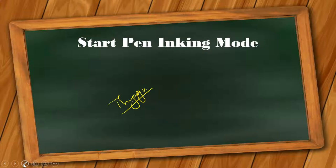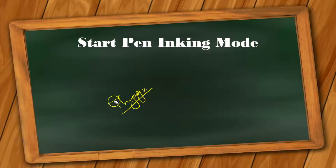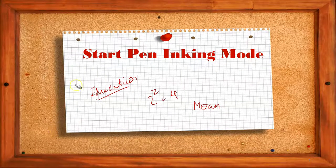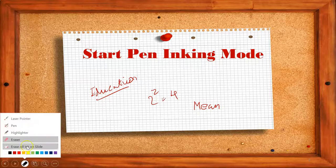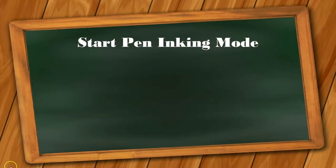Suppose I want to erase annotations — how do I erase them? Go to the third button in the bottom and select the Eraser option, then erase what you want. For the previous slide where I wrote a lot of annotations, I can delete everything at once by selecting 'Erase All Ink on Slide.' Once we click that, everything is automatically removed. In this manner we can remove all annotations.